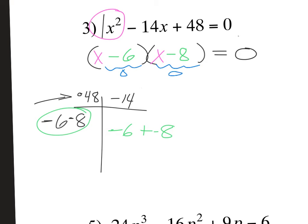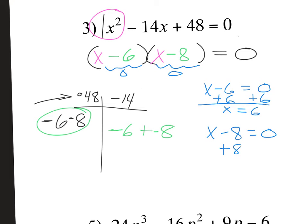Because of how multiplication works, either factor has to equal zero — zero times anything equals zero. So we get two equations: x minus 6 equals zero and x minus 8 equals zero. Add the constant to both sides in each case. Your two solutions are x equals 6 or x equals 8. In the Google Form, use curly brackets and put the smaller solution first: 6 comma 8.